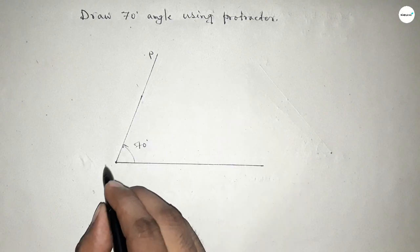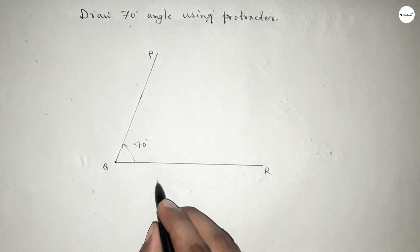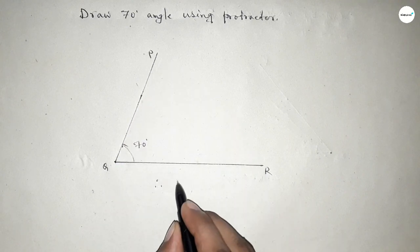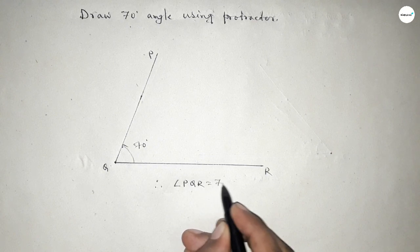This is 70 degrees and this is P, Q and R. So therefore angle PQR equals 70 degrees. That's all.